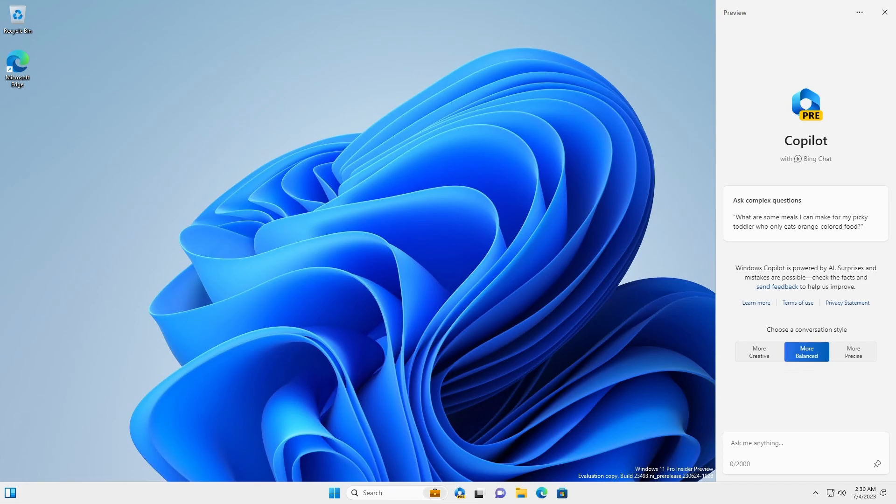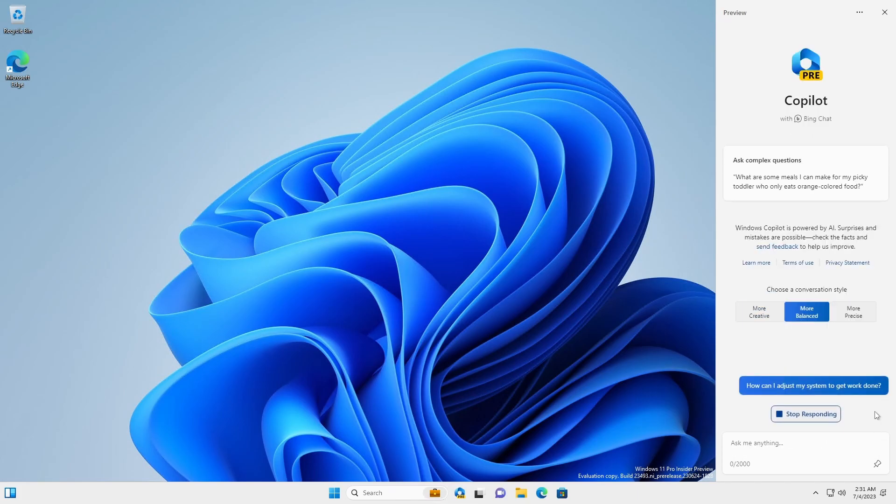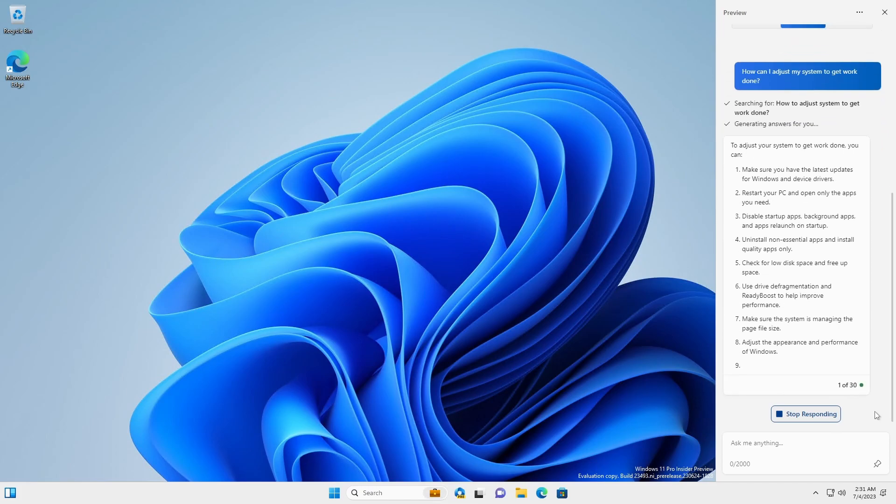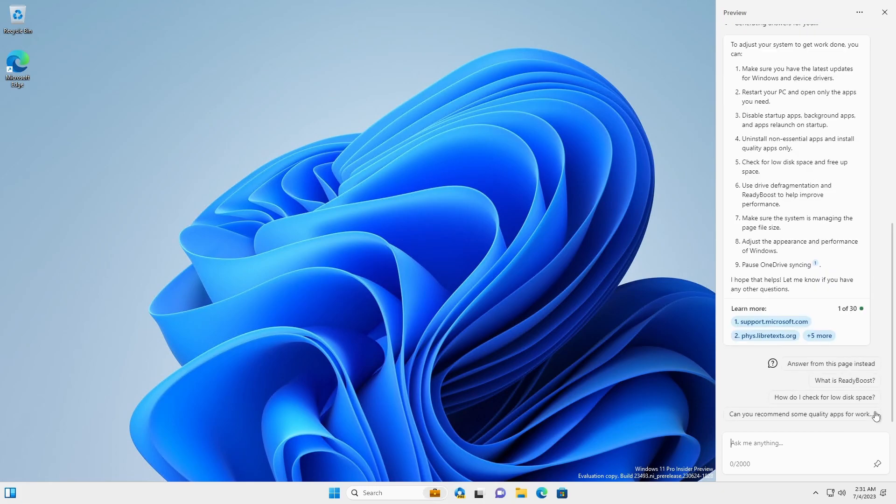So let's go ahead and start with one of the first prompts that was thrown at Copilot in that demo. How can I adjust my system to get work done? So it gives me a response, but this certainly isn't the type of response that we saw in the Windows Copilot demo. But that's kind of what we expect. This is a demo that very much is just in its infancy right now. This is a preview. And so what we're seeing here is what it's going to look like, but we don't have all the functionality there. So let's try something it can do.